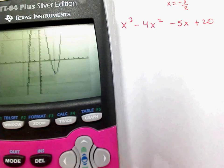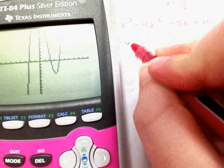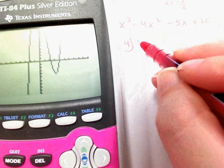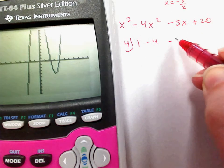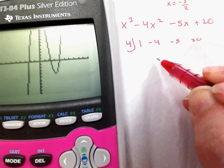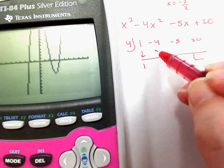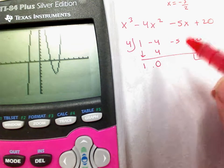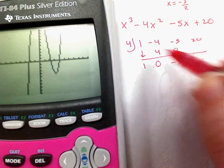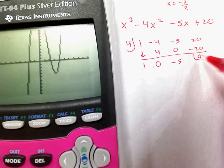So, I'm going to go ahead and synthetically divide the 4 out. So, I put 1, negative 4, negative 5, and 20. Bring down the 1, multiply and I get positive 4, add negative 0, multiply by 0, negative 0, add negative 5, multiply and I get negative 20, add negative 0.